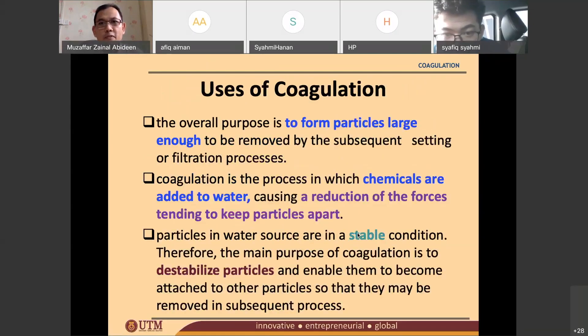So what are the purpose of coagulation? This is the use of coagulation. Basically we like to form bigger size of particles. So how do we do that? By adding chemicals. We need to add chemicals into the water. Let's say this is your water sample. You need to put chemicals inside it so that it will form bigger size of particles.